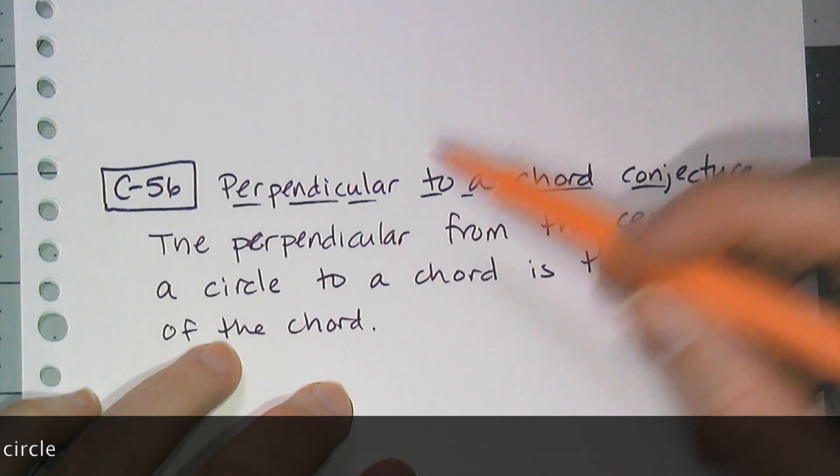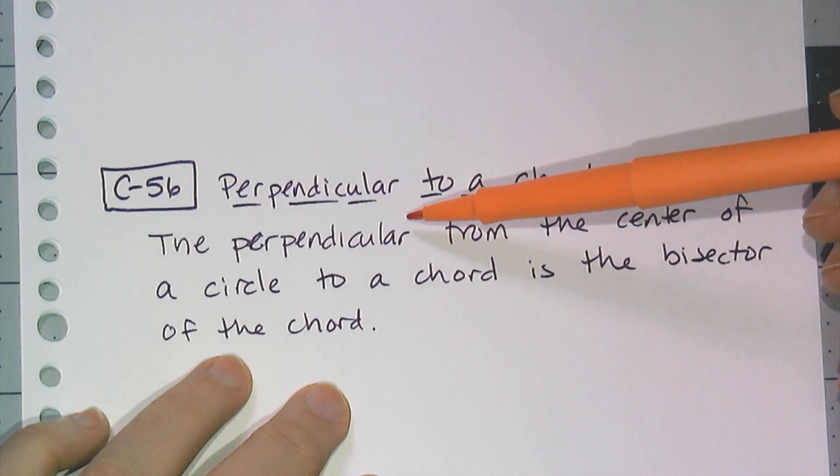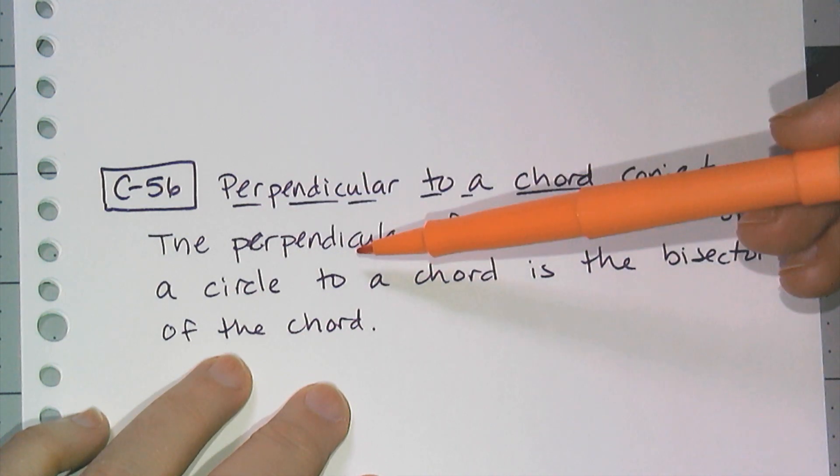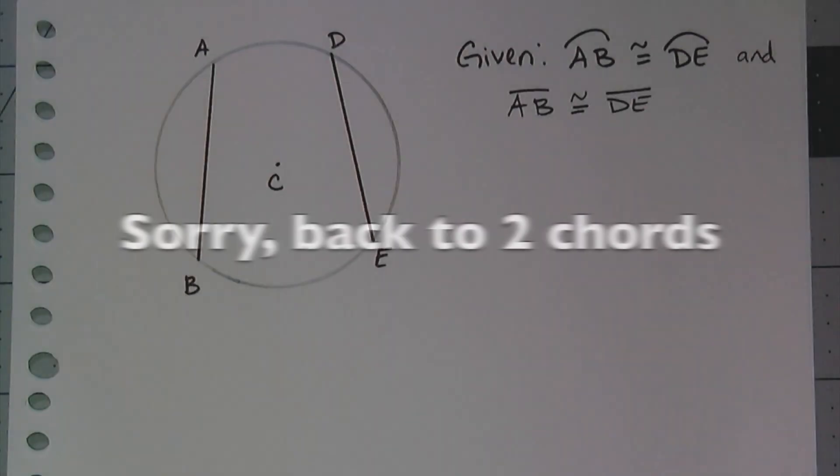Which actually gives us a very important conjecture. Conjecture C56, perpendicular to a chord conjecture, which says that the perpendicular from the center of a circle to a chord is the bisector of the chord.